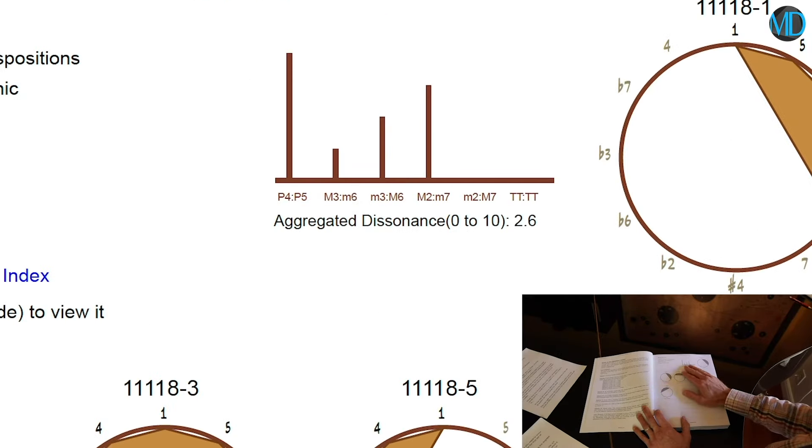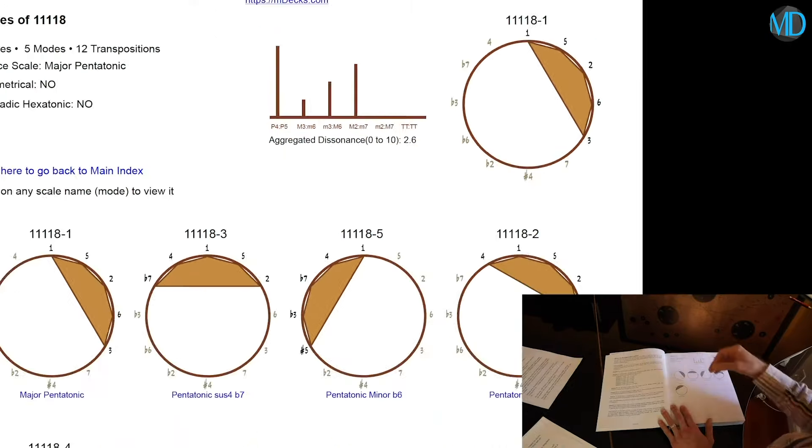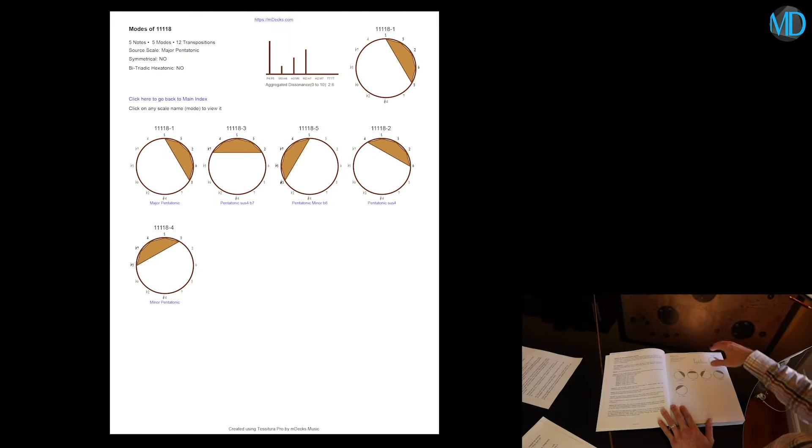At the top of the page, towards the center, there's an interval content chart. We'll look at this chart in detail later on, but basically it offers a visual way of quantifying the amount of consonance or dissonance in the set of related modes based on the intervals that are present. Before, we mentioned that there were two types of pages in our encyclopedia. We just broke down the first one.